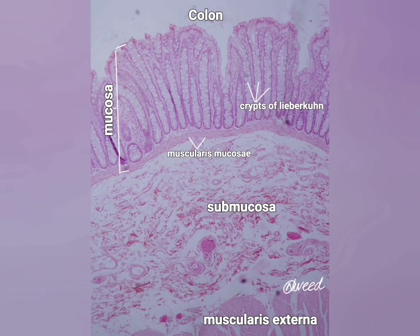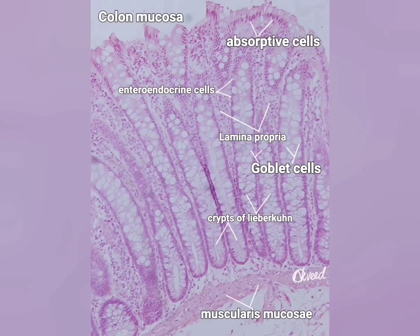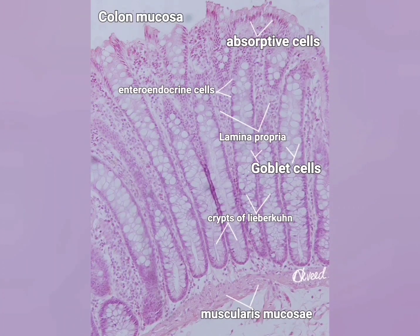The lamina propria contains a large number of crypts of Lieberkühn. Colonocytes and goblet cells are present in the upper one-third of these crypts, while the lower third of these glands are lined mainly by goblet cells. Some enteroendocrine cells and undifferentiated stem cells are also present in the deeper parts of these glands.